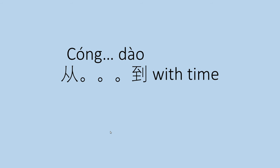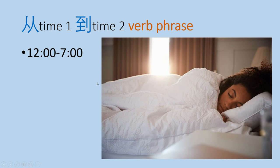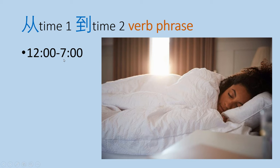With time, the way we would use this: if we say 从, time one, 到, time two, do something. So how would we say, I sleep from 12 to 7? It would be 我从十二点到七点睡觉.